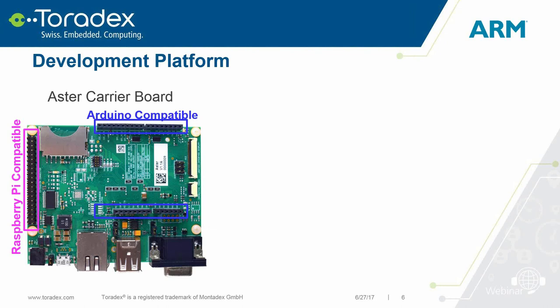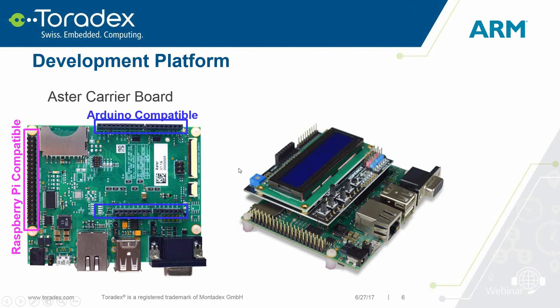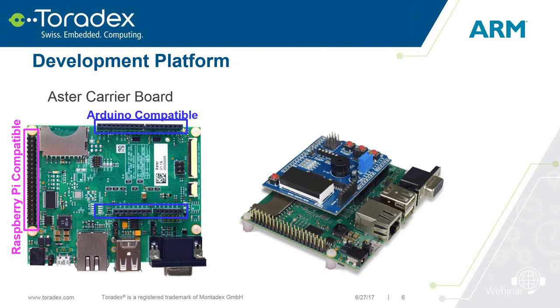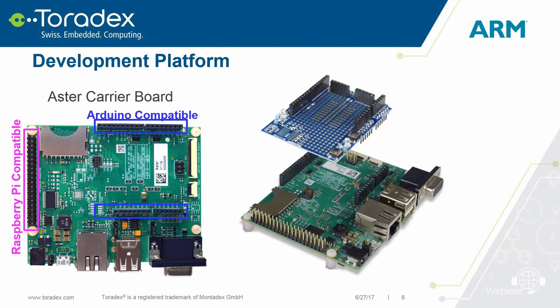I've added some GIFs showing what's possible with the Aster platform. For example, a GPS shield from an Arduino-compatible that you can just connect to the board, a SPI display — also Arduino compatible — another with push buttons and LEDs, and a very small display. Finally, you can even use it as a breadboard and quickly connect with our boards for prototypes.